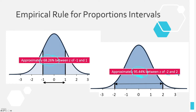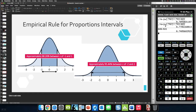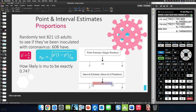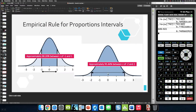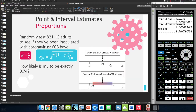Our p-prime was 0.74. What we want to do is start with our p-prime and add and subtract two standard deviations, because we know that 95.44% will be within two standard deviations. So we start with 0.74 and add and subtract two times our standard deviation. The standard deviation formula is the square root of p-prime times (1 minus p-prime) divided by n — that's 0.74 times (1 minus 0.74) divided by 821, all under the square root, times 2.